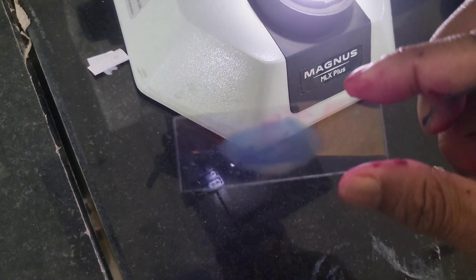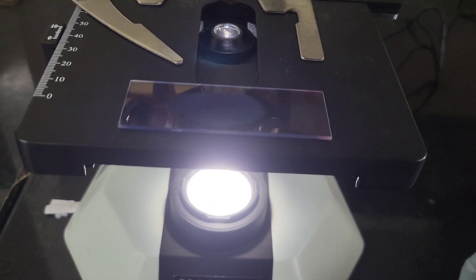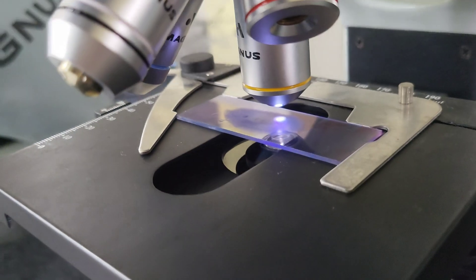How many fields are observed before declaring a slide is negative? At least 100 to 300 fields. Can Ziehl staining differentiate between species of mycobacterium? No. Mycobacterium leprae better detected using modified Ziehl stain or Fite-Faraco stain.